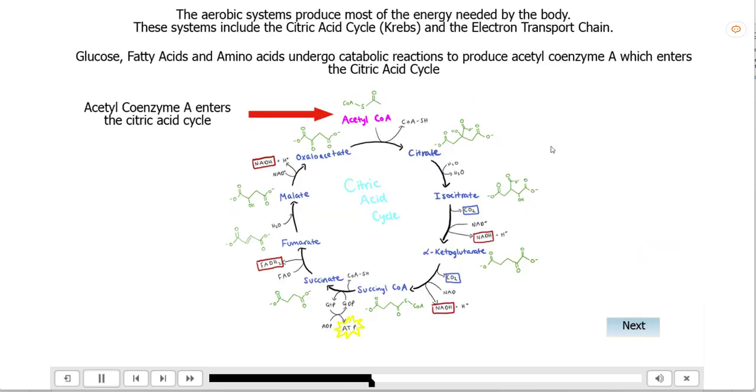All right, so what happens to the acetyl coenzyme A? It enters the aerobic systems, which are located in the mitochondrion. And the first one of these is the Krebs cycle, or citric acid cycle.